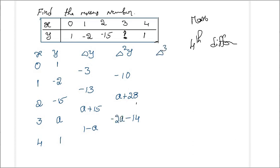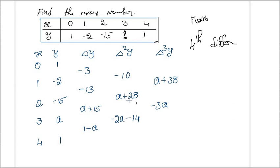Next, delta cubed Δ³y: (a+28) - (-10) = a+38; then (-14-2a) - (a+28) = -3a - 42; actually let me note the values computed: a+38, and -14 minus 28 which gives -42 for the third difference entry.